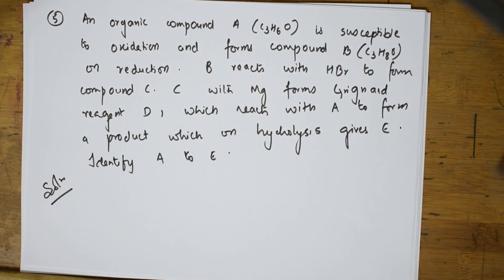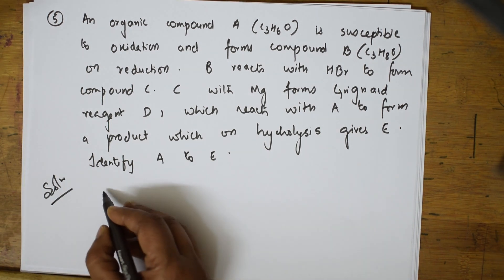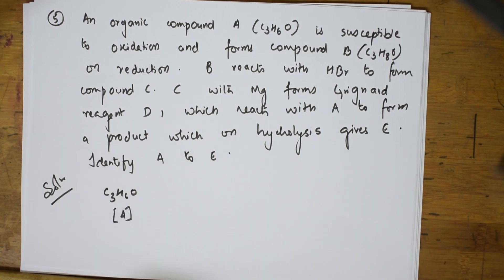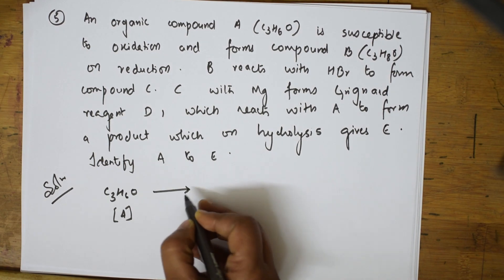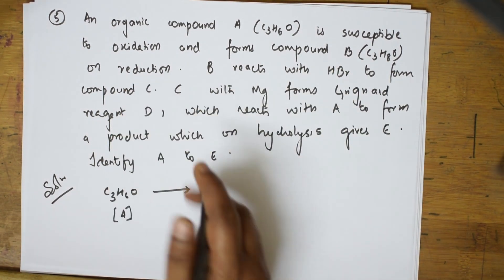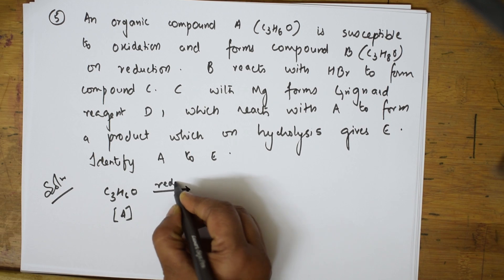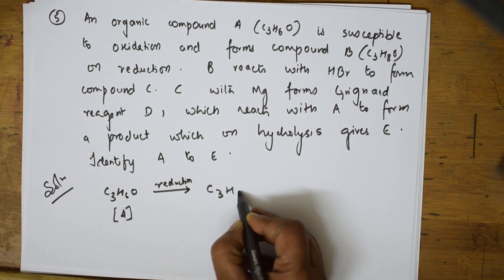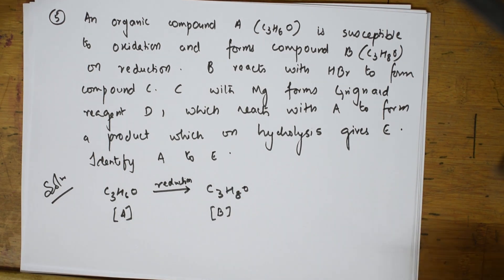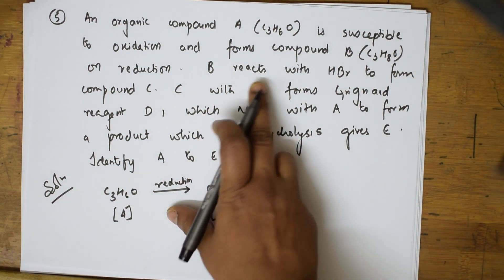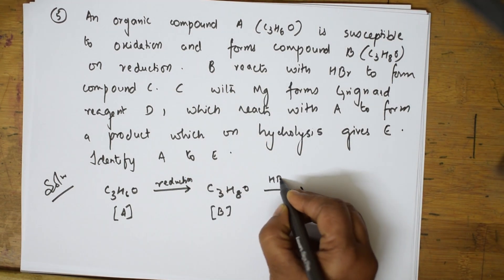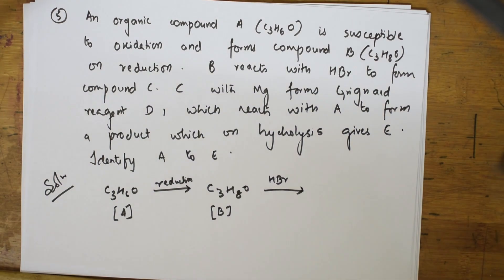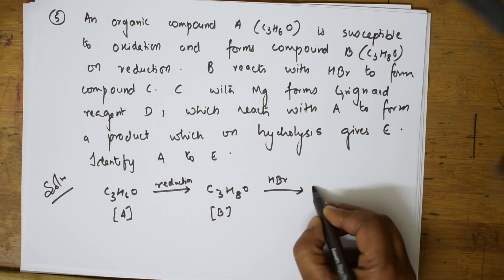When such a question is given, try to make a summary of the given facts. Compound A has formula C₃H₆O — it is susceptible to oxidation but undergoes reduction to form compound B whose formula is C₃H₈O. Then B reacts with HBr to form compound C. No formula is given for compound C, so just write C and keep it.